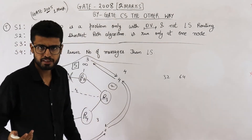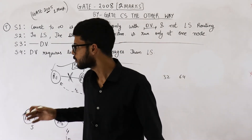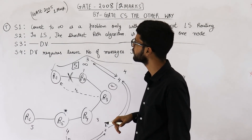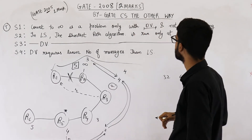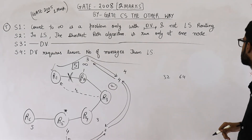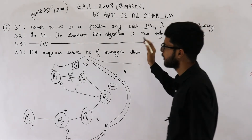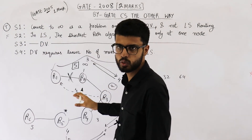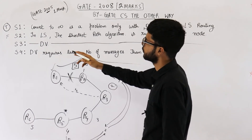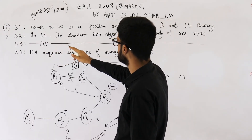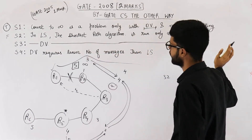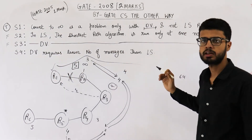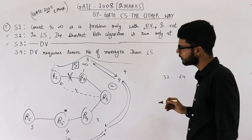Now let's move on to statement number two, S2: it says in LS, the shortest path algorithm is run only at one node. No, this is false — at every node the algorithm is run. Statement number three says in DV the shortest path algorithm is run only at one node — that is also false. The shortest path algorithm has to be run on all nodes, whether it is LS or DV.